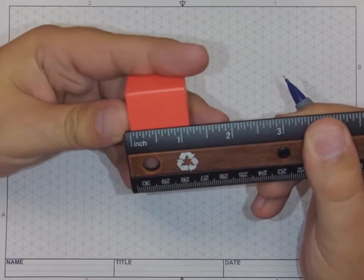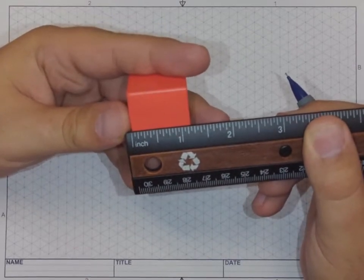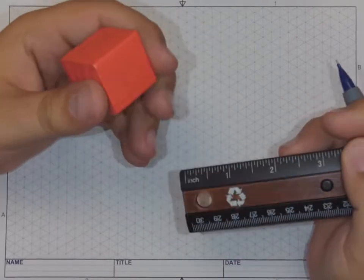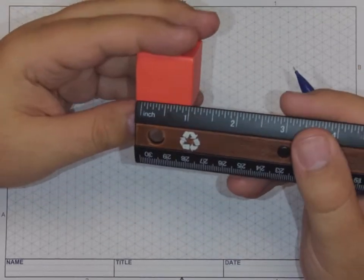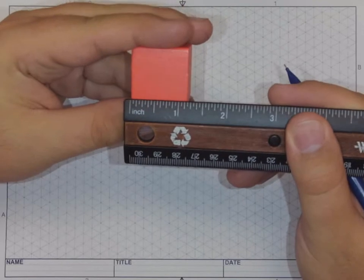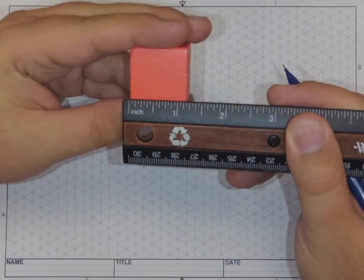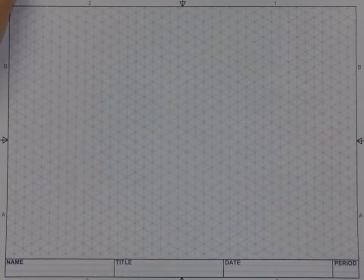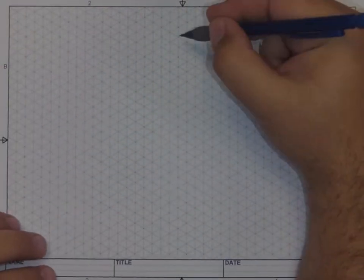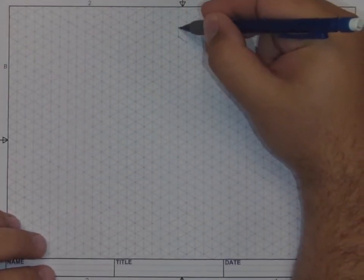They would be measuring these and then sketching them on isometric grid approximately to one-to-one scale. When you take a look, a lot of these cubes measure about an inch and an eighth.